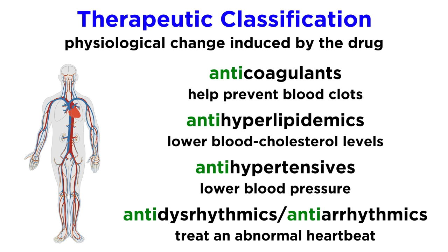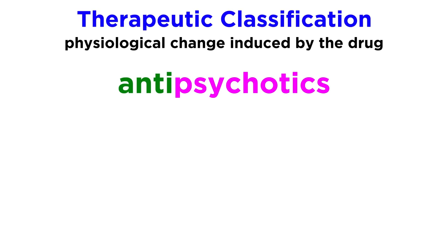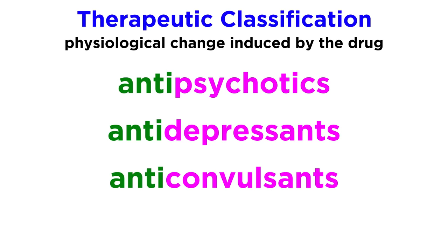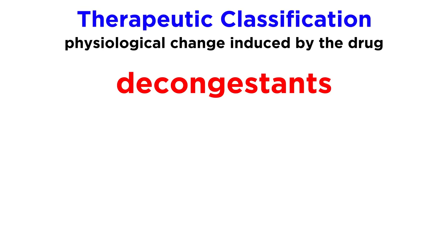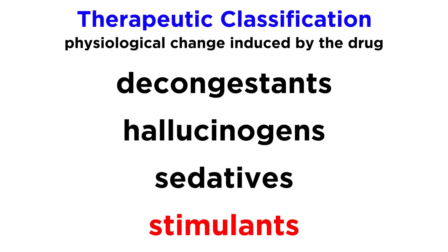A large percentage of these categories begin with the prefix 'anti', because anti means against, and these categories describe the condition that the drug is working against. There are anti-psychotics, anti-depressants, anti-convulsants, anti-nauseants, and so forth. Some of their functions are immediately apparent from the name, while others require a little more background information. Of course there are other classes that don't begin with this prefix: decongestants, hallucinogens, sedatives, stimulants — it's a long list, and many or most of these will be addressed at some point in this series.